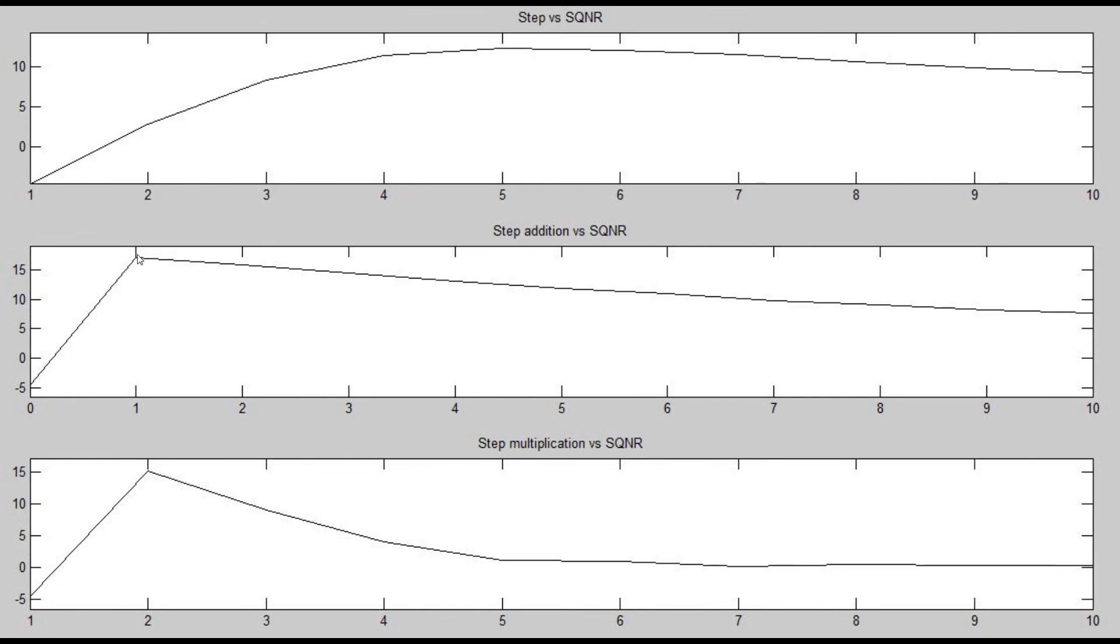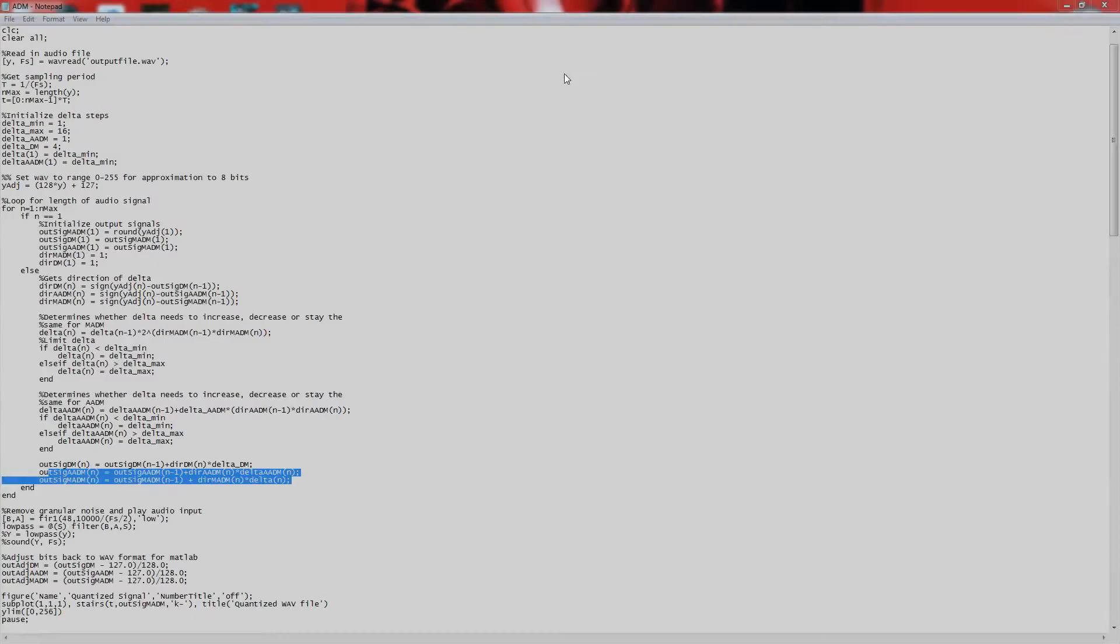So here, you will see, we can get like a signal to noise ratio of around 17, 15 around here, and then the best we get out of delta modulation is like 12. So, yeah, that's the way adaptive delta modulation can work for us.